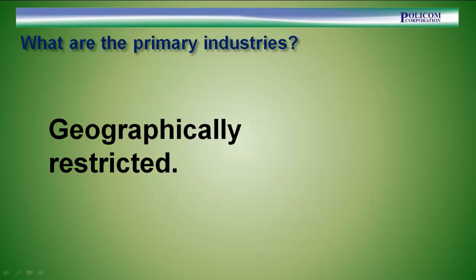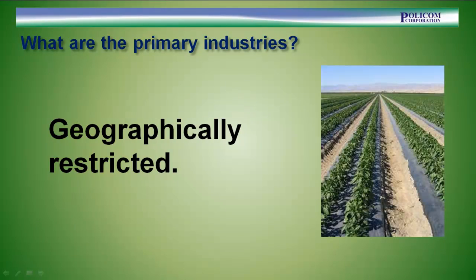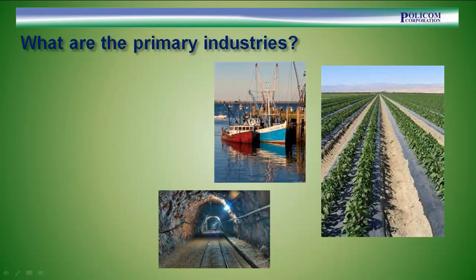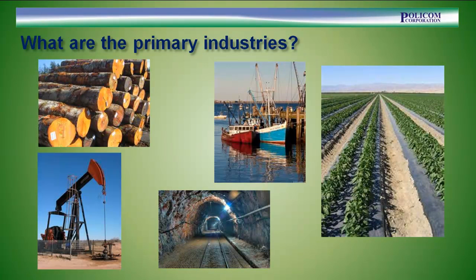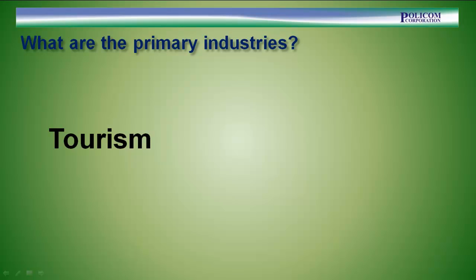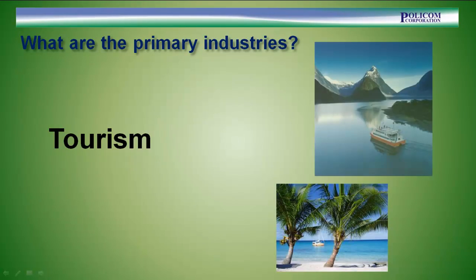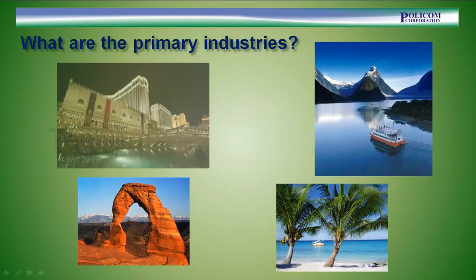Some industries are geographically restricted. They have evolved because of the natural resources in the area. When these resources are harvested or extracted and taken to the marketplace and sold, money is imported to the local economy. When individuals travel to a community for recreational or entertainment purposes, money flows to the local economy.